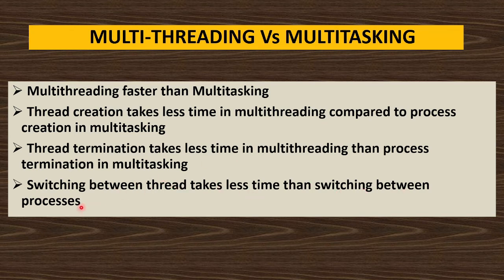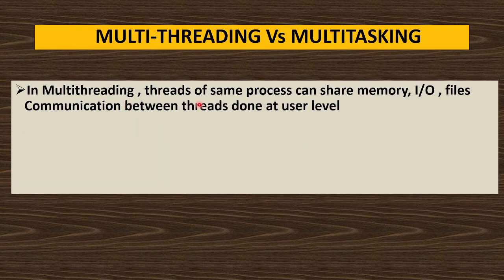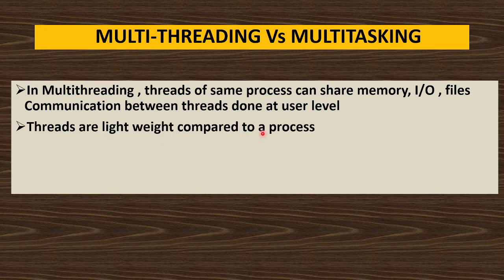Switching from one thread to another takes much less time compared to switching from one process to another. In multi-threading, threads of the same process can share memory, IO, and files, and communication between threads is done at the user level. Threads are lightweight compared to a process, which is very large in size.